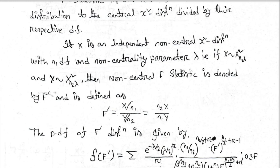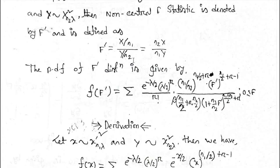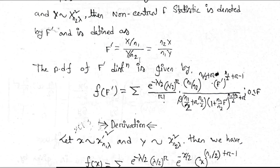The PDF of F prime distribution is given by: function of F prime equals the summation e to the negative lambda by 2 times lambda by 2 to the power r by r factorial times n1 by n2 to the power n1 by 2 plus r times F prime to the power n1 by 2 plus r minus 1